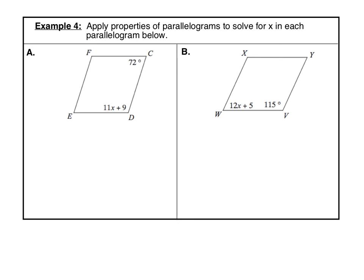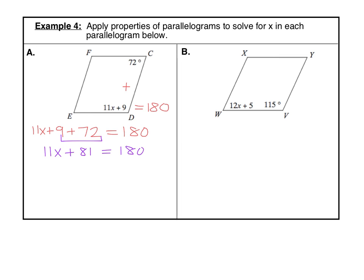For example four, let's apply that property to solve for X. Angle C is 72 degrees and angle D is 11X plus 9. Those are consecutive angles, and consecutive angles are supplementary, so they must total 180. Do not set them equal to each other — that's only for opposite angles. So 11X plus 9 plus 72 equals 180. Combining like terms: 11X plus 81 equals 180. Subtract 81 from each side to get 11X equals 99, then divide by 11 to get X equals 9.